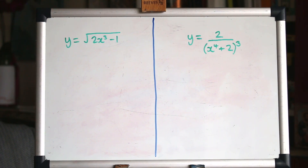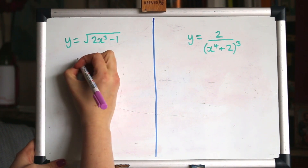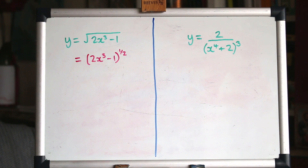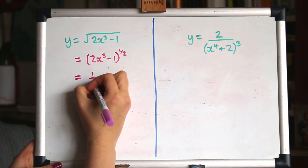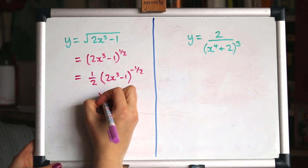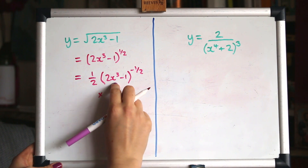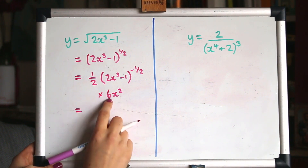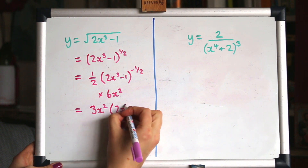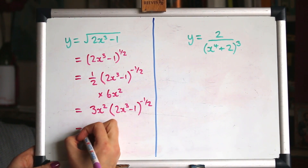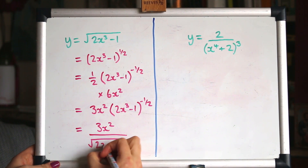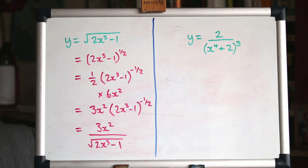These next ones are slightly harder than the previous two because they need rewriting before you can differentiate them. I'm going to rewrite them with powers instead of the root sign, and do it the quick way. Differentiate the outer function, then multiply by the derivative of the inner function, which will be 6x². Simplifying: gathering the half and the 6x² gives 3x². You can put that back down on the bottom as a root if you want to, but you don't have to.